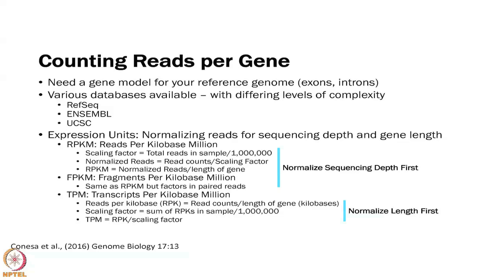There are two main normalization approaches. The first normalizes by sequencing depth first and then by gene length — that is RPKM/FPKM. The other normalizes by gene length first and then by the number of reads in the sample — that is TPM. It is not entirely clear which one is better; they each have strengths and limitations, and they have different effects on your downstream analysis.